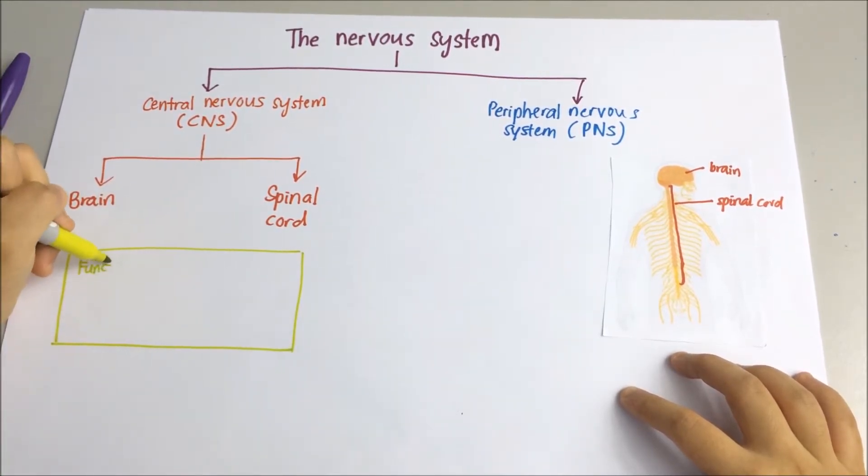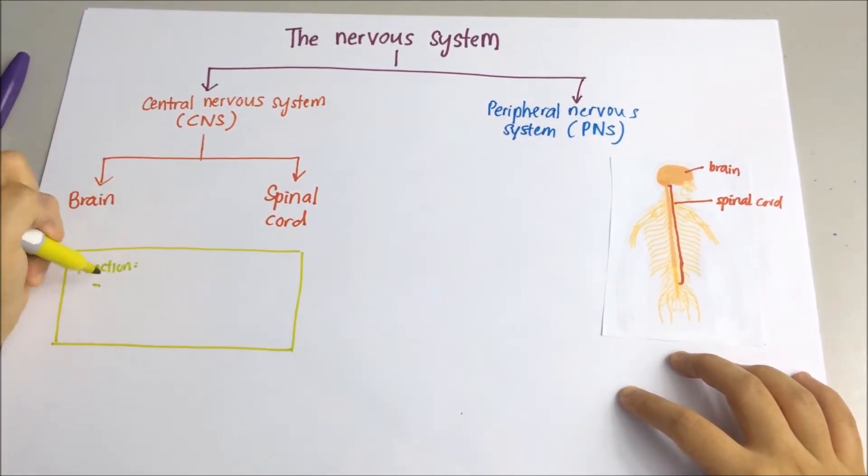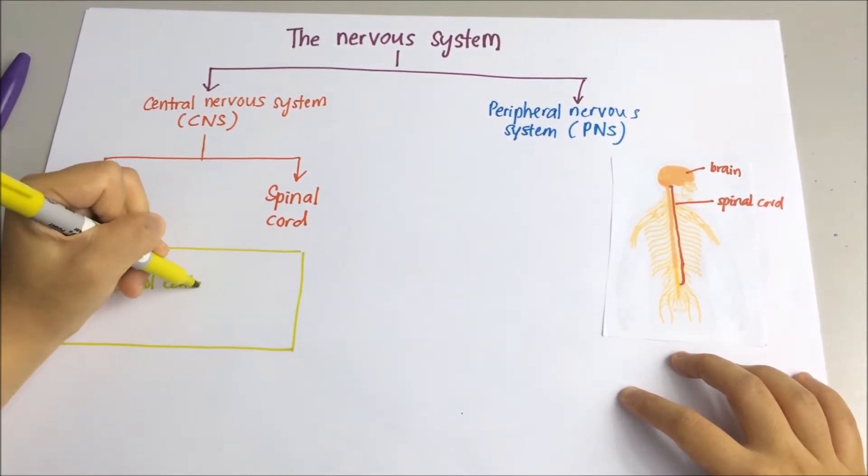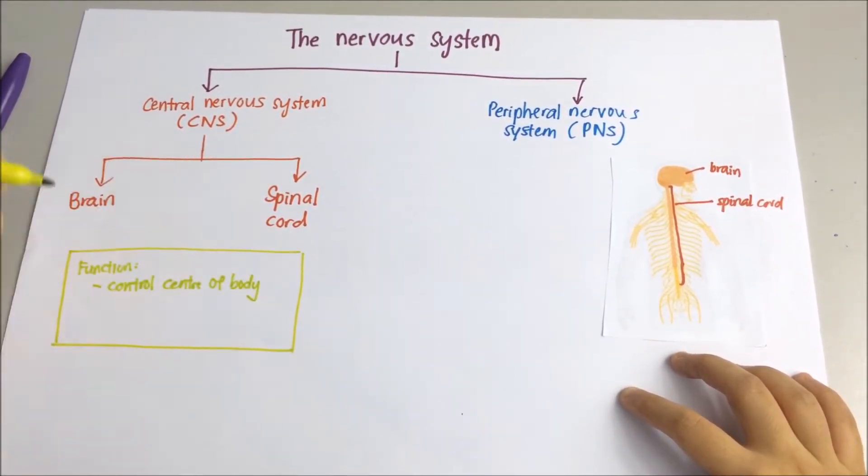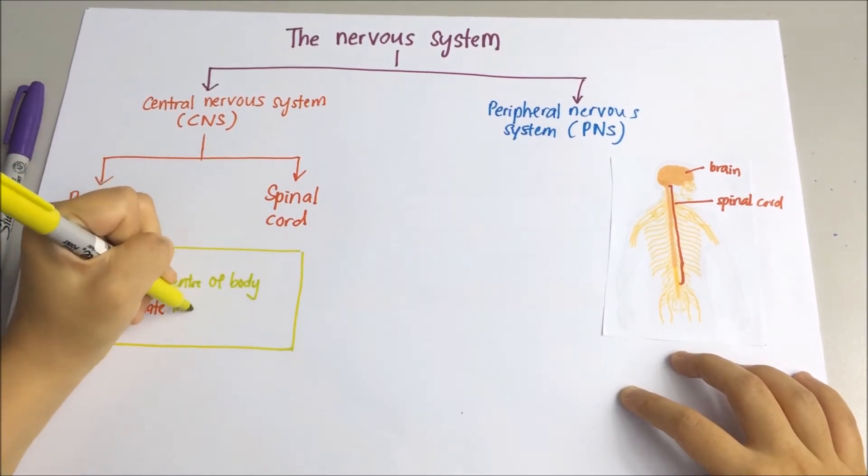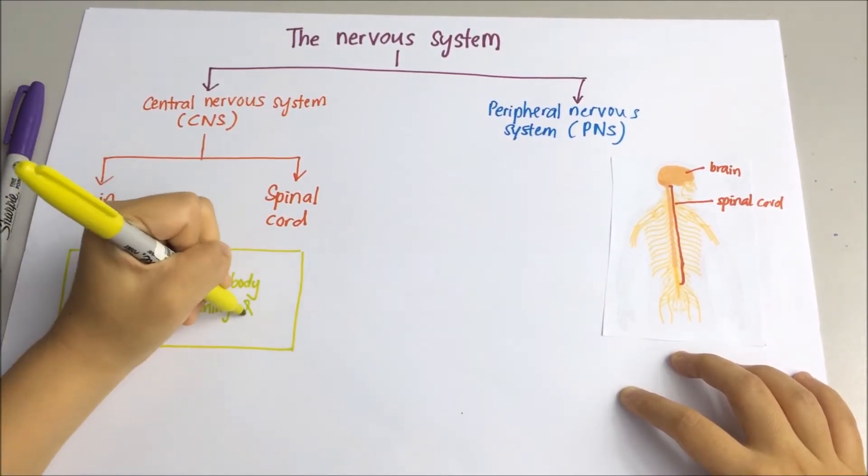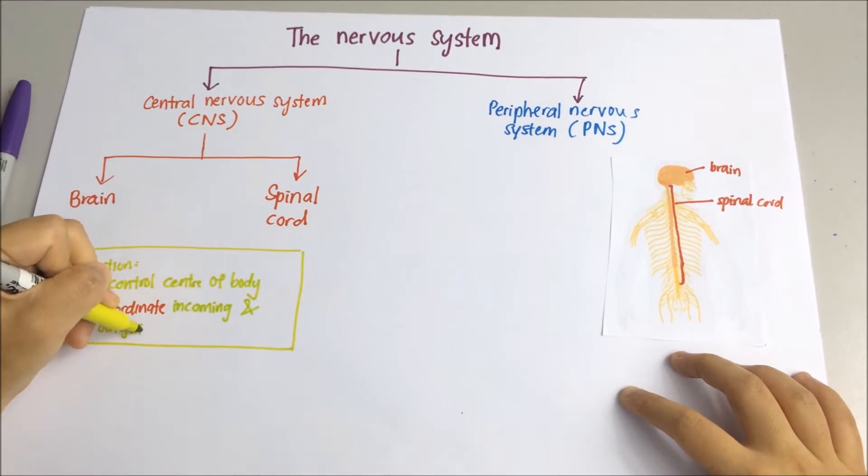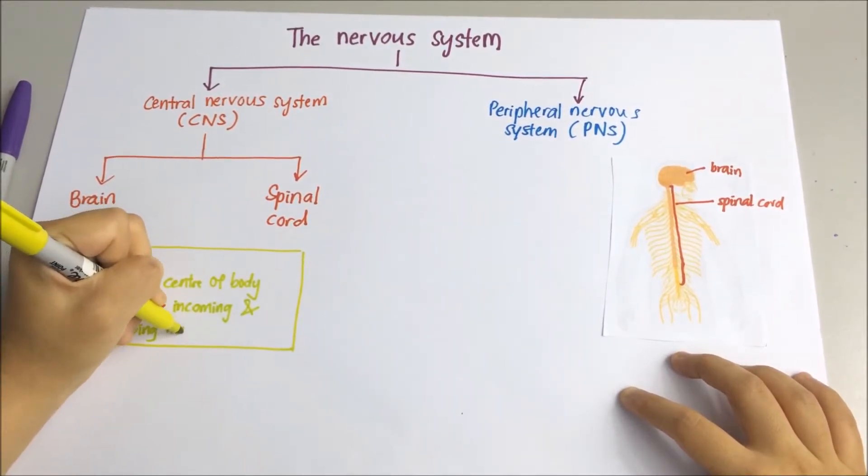So what is the main function of central nervous system? It is the control center of the whole nervous system. And the focus of central nervous system is on coordinating the incoming and also outgoing neural impulses. The key word here is coordinate.